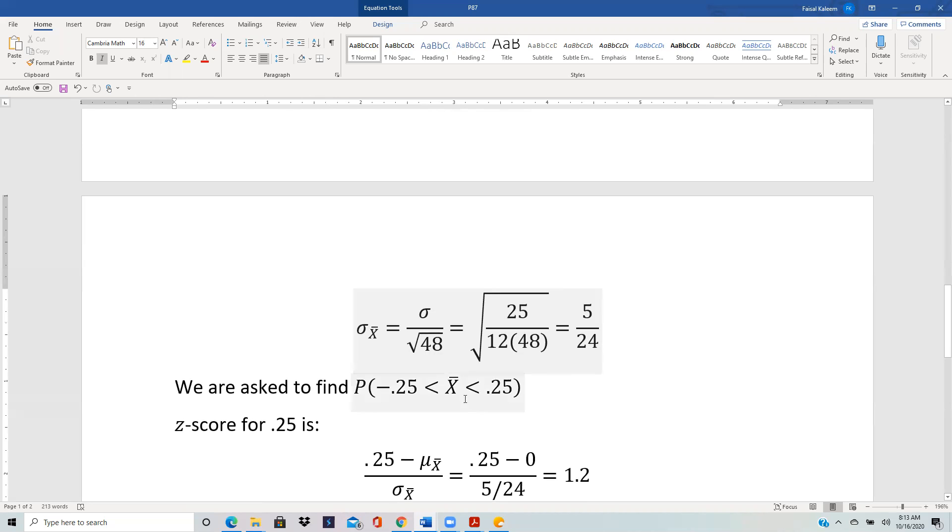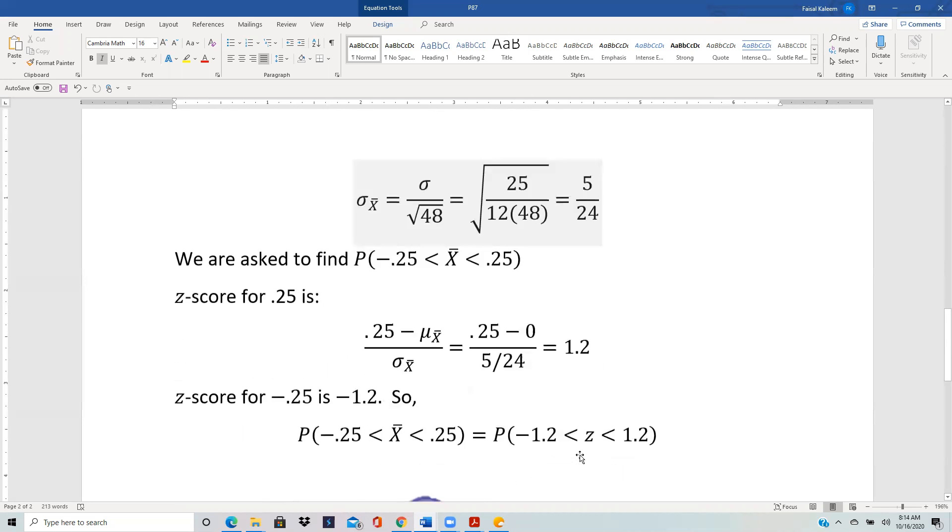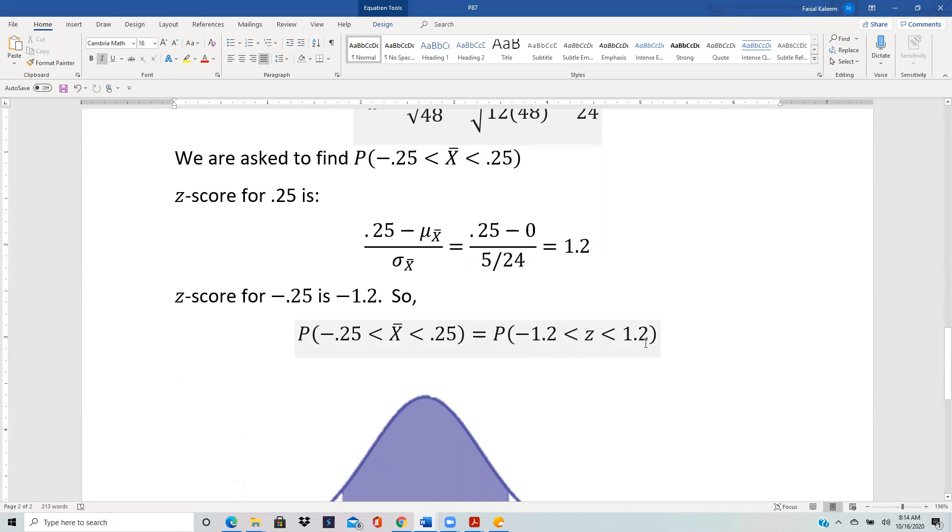We want the probability that the difference between the true age and the rounded age is within 0.25, so between negative 0.25 and 0.25. X̄ is the mean of the age differences. The z-score of 0.25 is 1.2, and negative 0.25 is negative 1.2. So we need P(-1.2 < Z < 1.2).